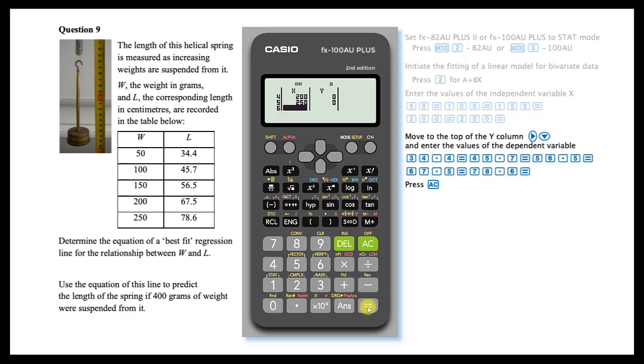Next, enter the values of the dependent variable in the adjacent column. Move the cursor to this column by arrowing right, then move to the top of the column.